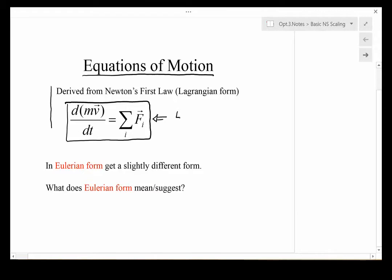This formulation is called a Lagrangian model or Lagrangian formulation. We'll see that in fluid mechanics, we're more likely to try to follow a particular region of space, which is considered an Eulerian form.